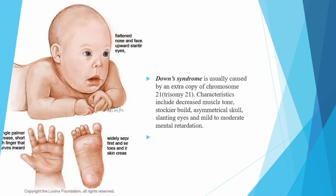Next, we have Down syndrome. It is usually caused by an extra copy of chromosome 21, also called trisomy 21. Characteristics include decreased muscle tone, stocky build, asymmetrical skull, slanting eyes, and mild to moderate mental retardation.